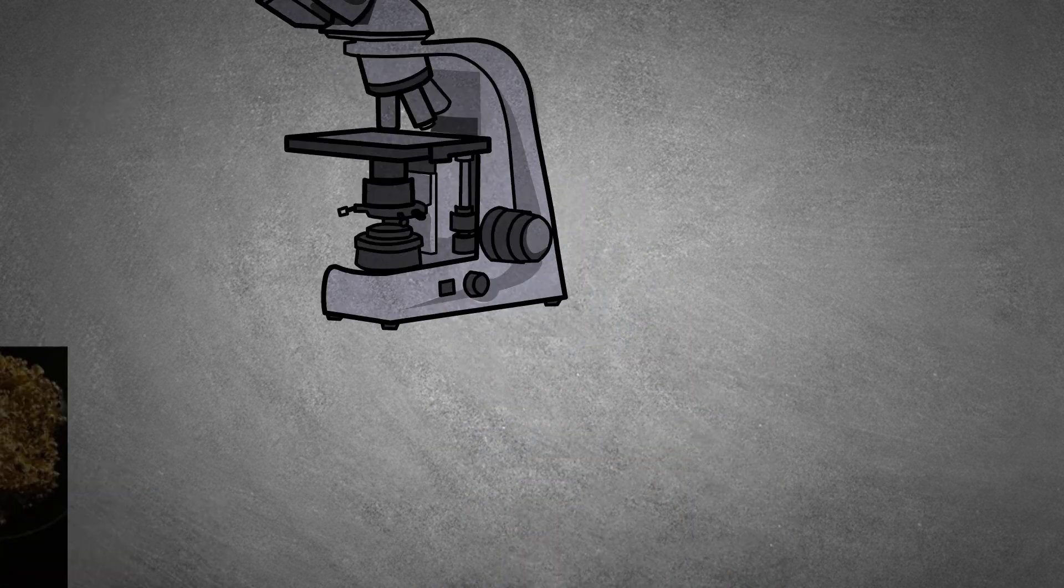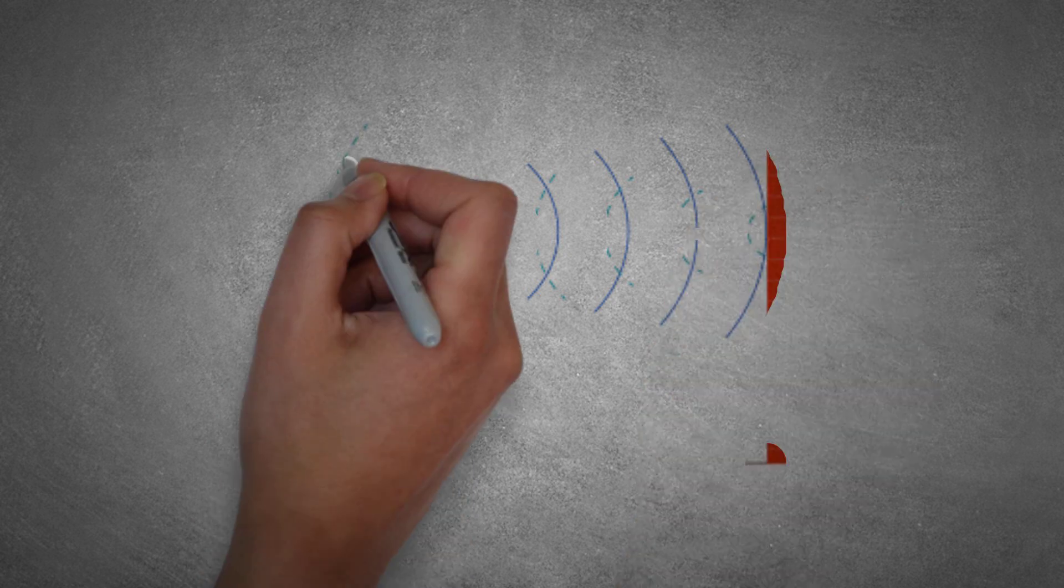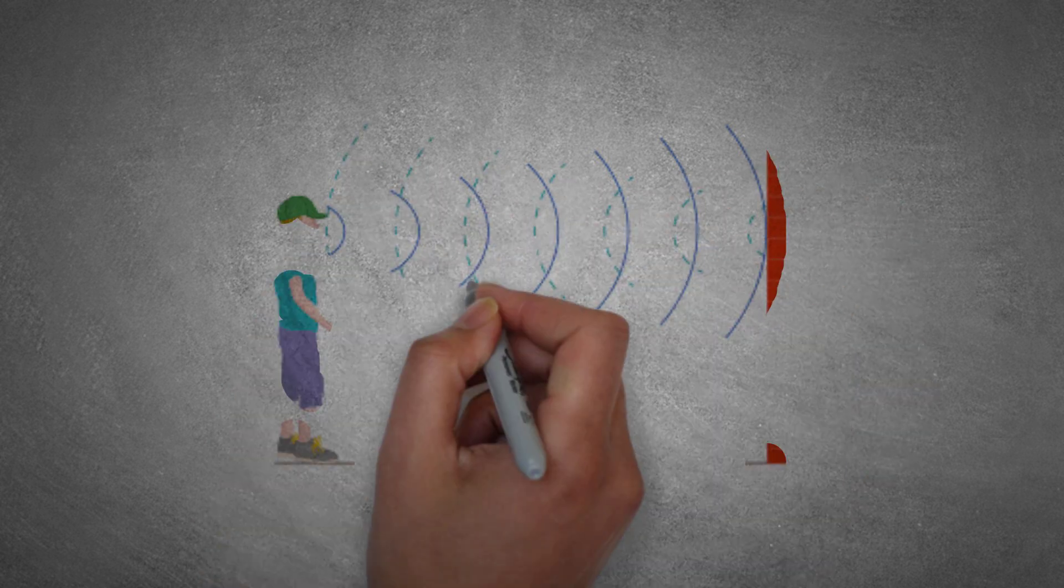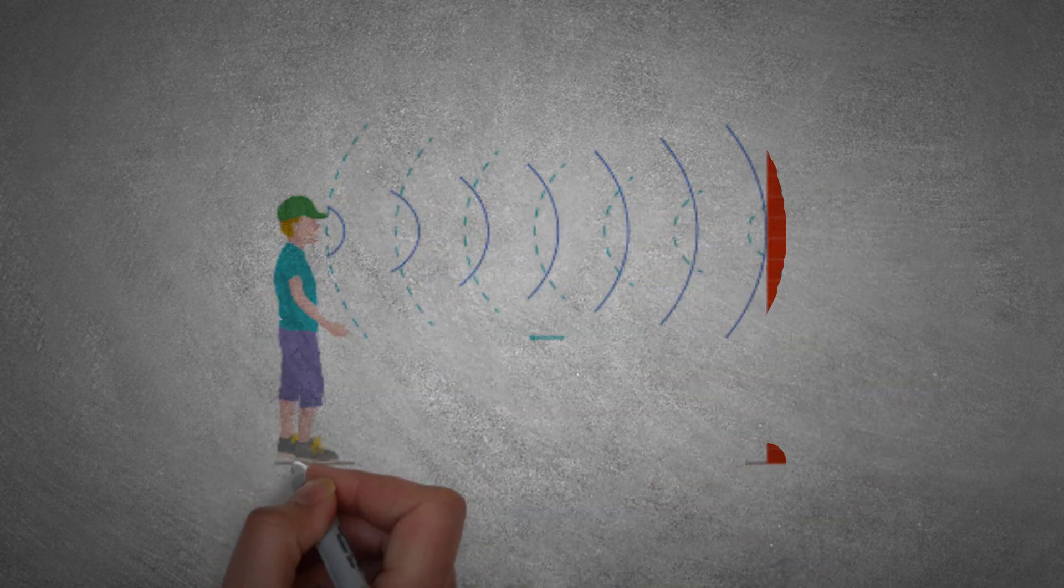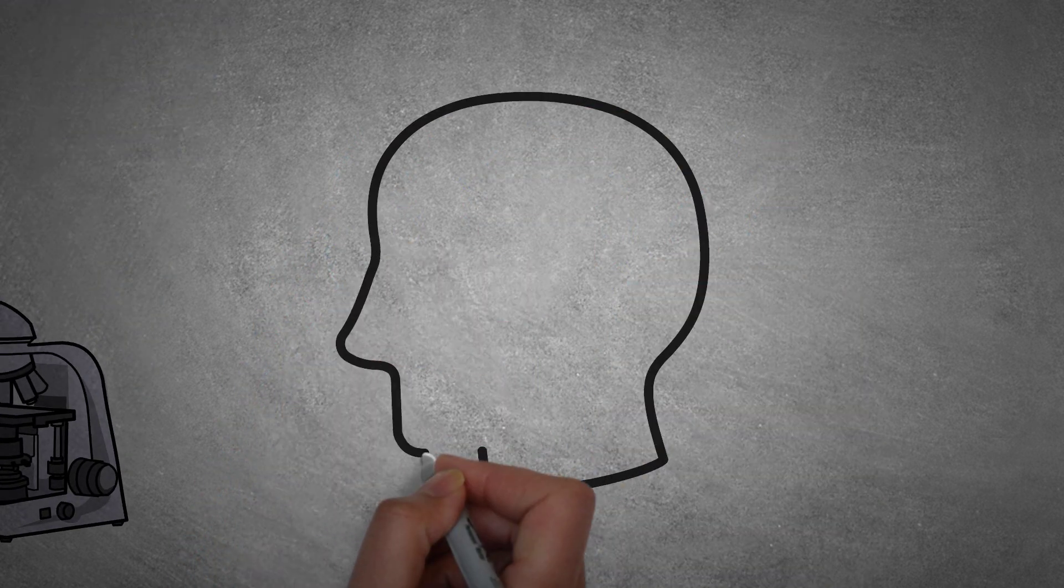This echo is important because this echo puts our left lobe and our right lobe in agreement. It aligns the two lobes to help us think with our whole mind.